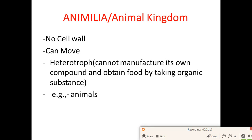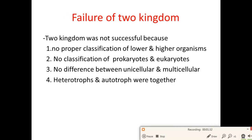Animalia, or the animal kingdom, does not have cell walls and organisms can move freely from one place to another. Their mode of nutrition is heterotrophic — they cannot manufacture their own compounds and obtain food from organic substances. For example, animals.